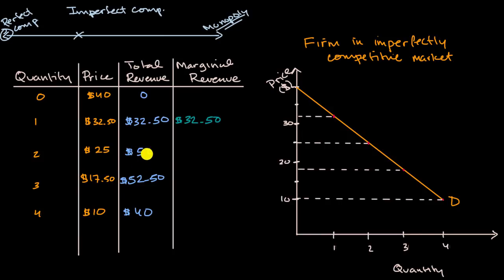But what about as we go from that first unit to that second unit? Well, our units go up by one, but our revenue from $32.50 to $50 goes up by $17.50.